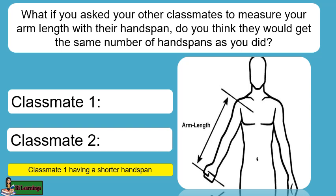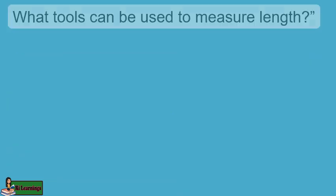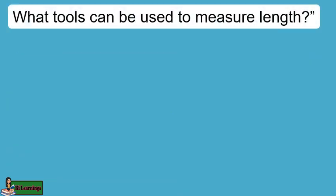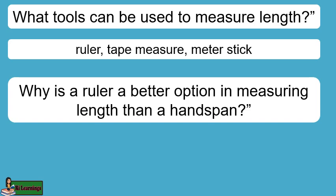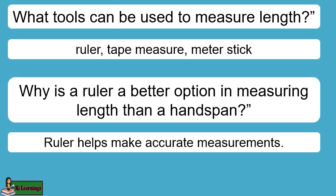What if you asked your other classmates to measure your arm length with their hand span? Do you think they would get the same number of hand spans as you did? What tools can be used to measure length? Ruler, tape measure, meter stick. Why is a ruler a better option in measuring length than a hand span? A ruler helps make accurate measurements.